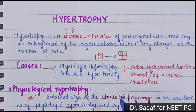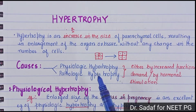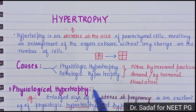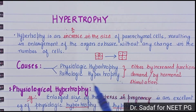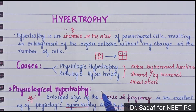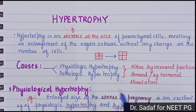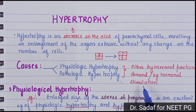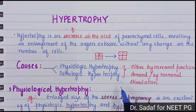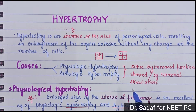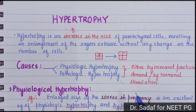What is the cause of hypertrophy? There are two causes: physiological hypertrophy and pathological hypertrophy. These occur either by an increase in functional demand or by hormonal stimulation.